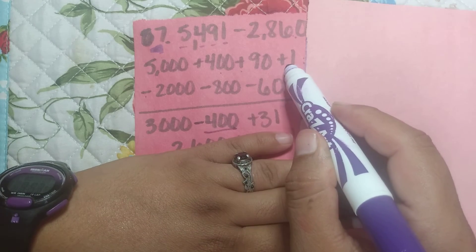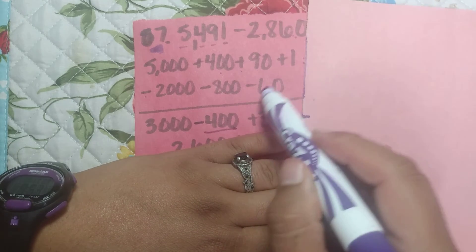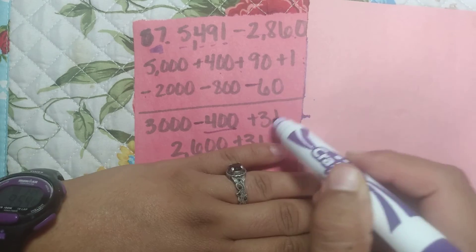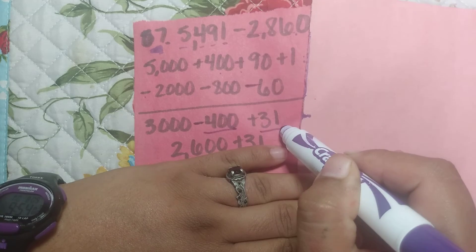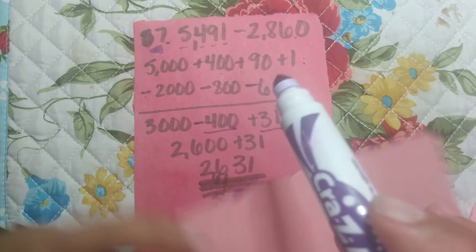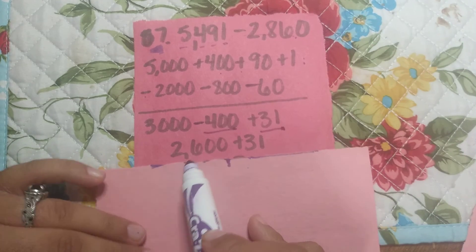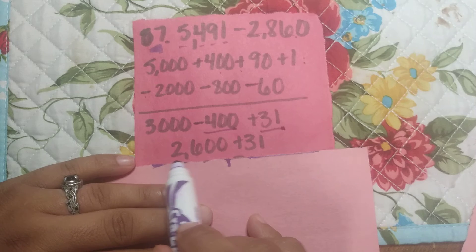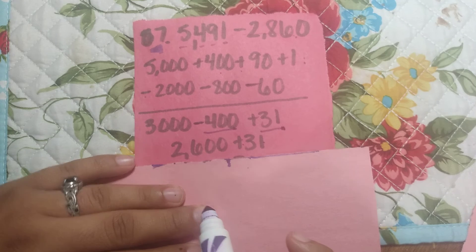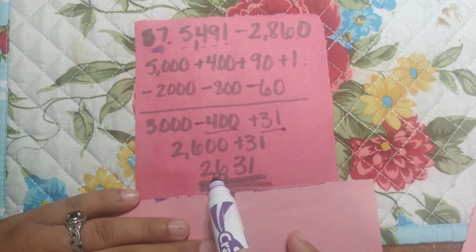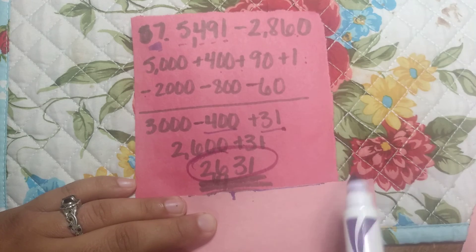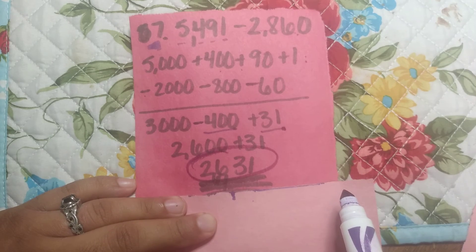Then 90 plus 1 is 91, minus 60 equals 31. So we're going to take this 2,600 and add 31, and it is going to equal 2,631.